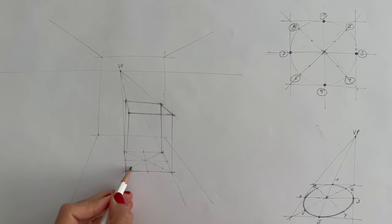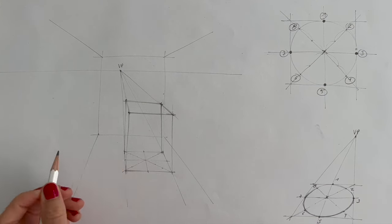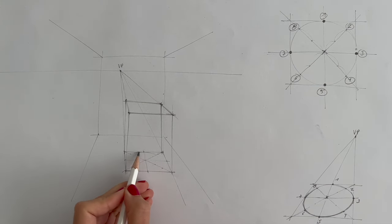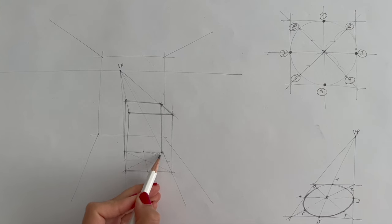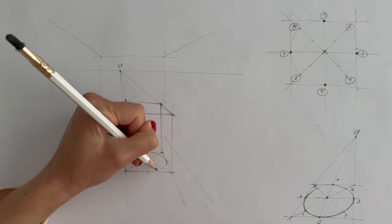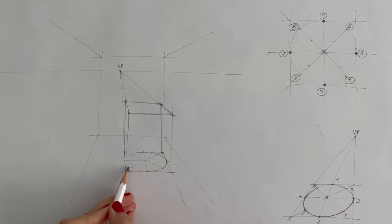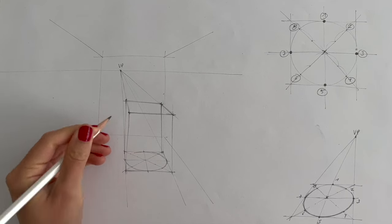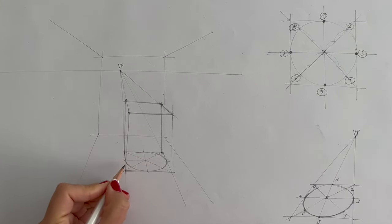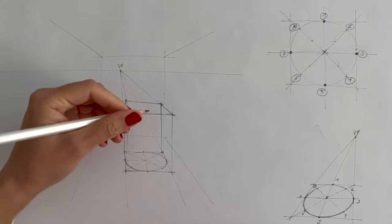So the same thing, diagonals, guidelines, vertical and horizontal. And then we are locating those points, one third of each quadrant. And this way we can beautifully draw in this ellipse, this circle in perspective. The foundation is done. Congratulations.